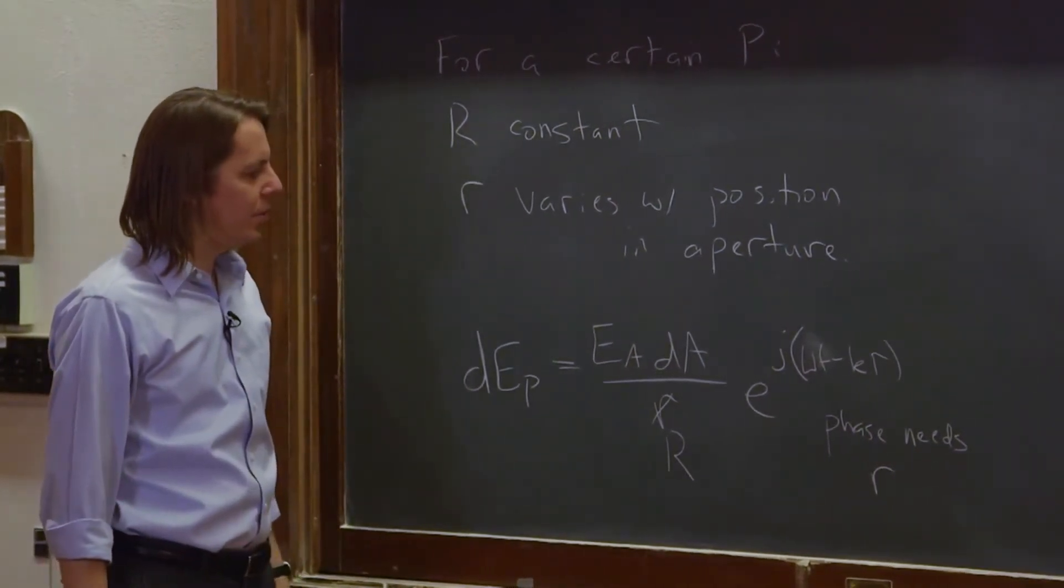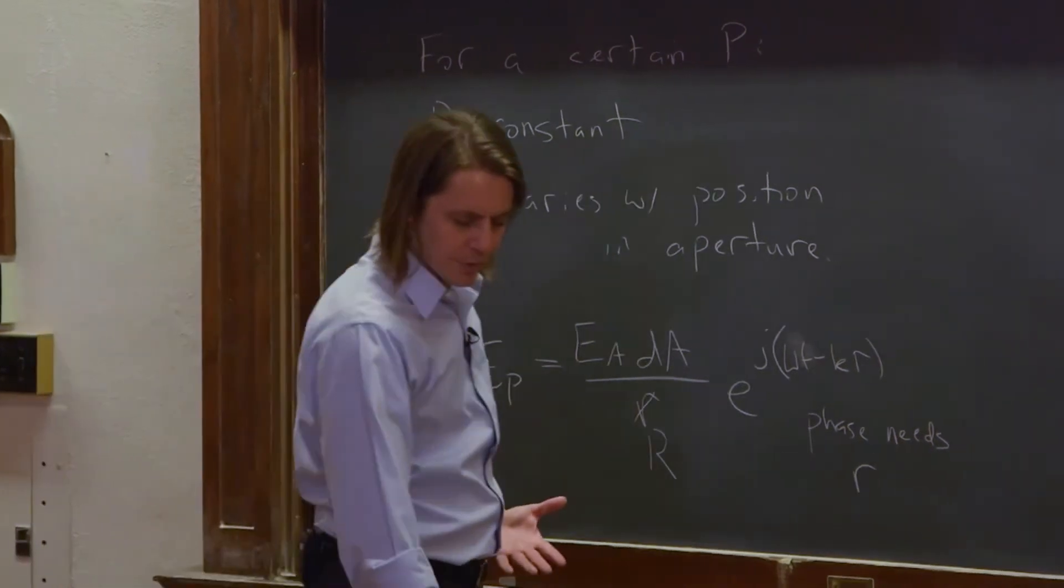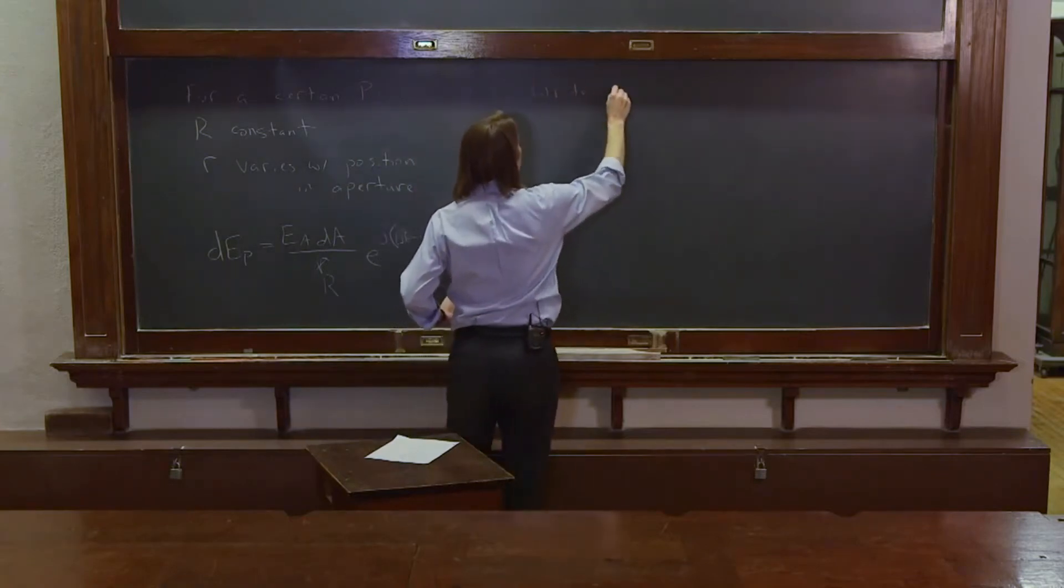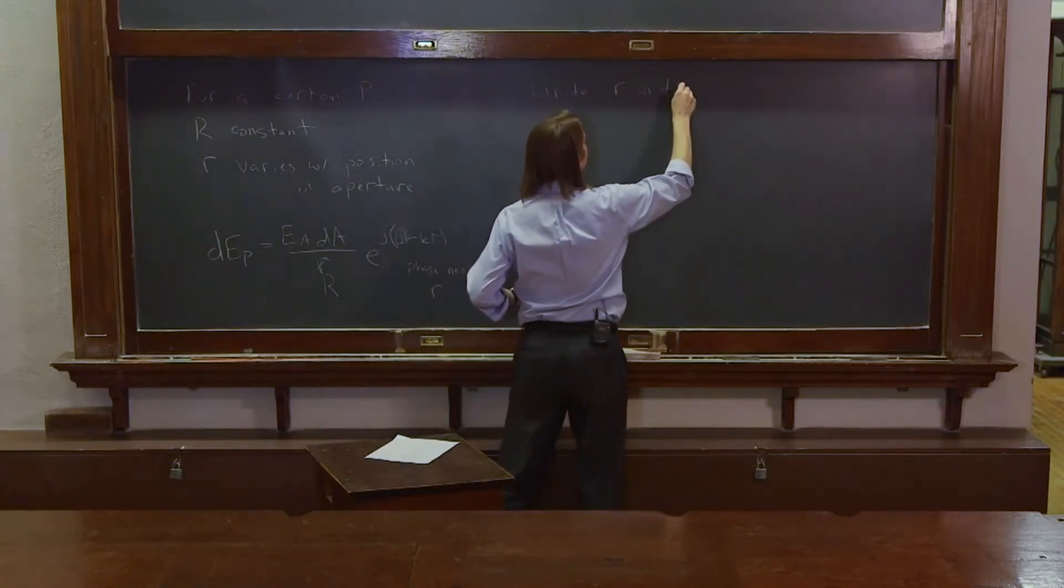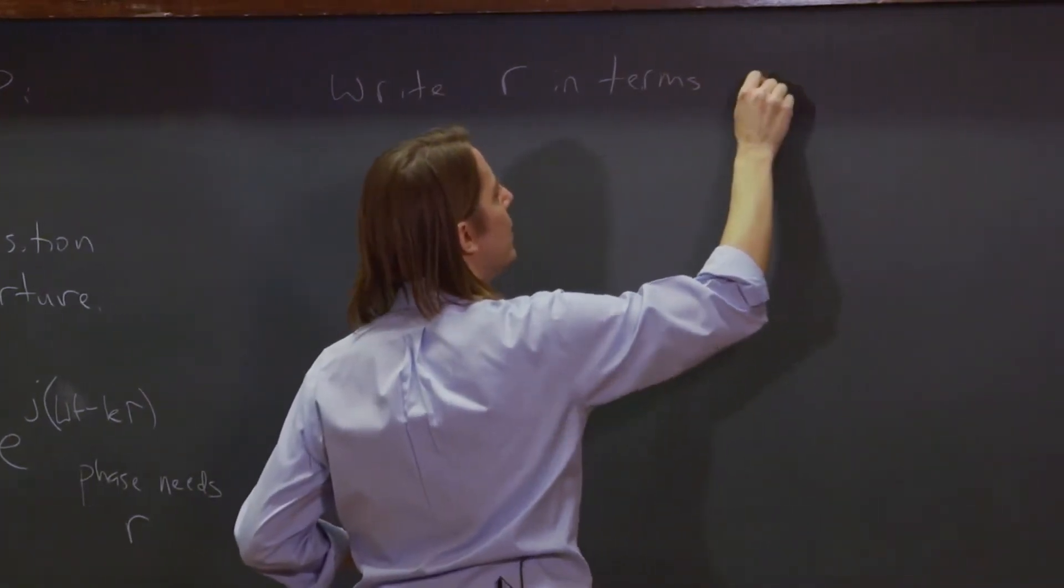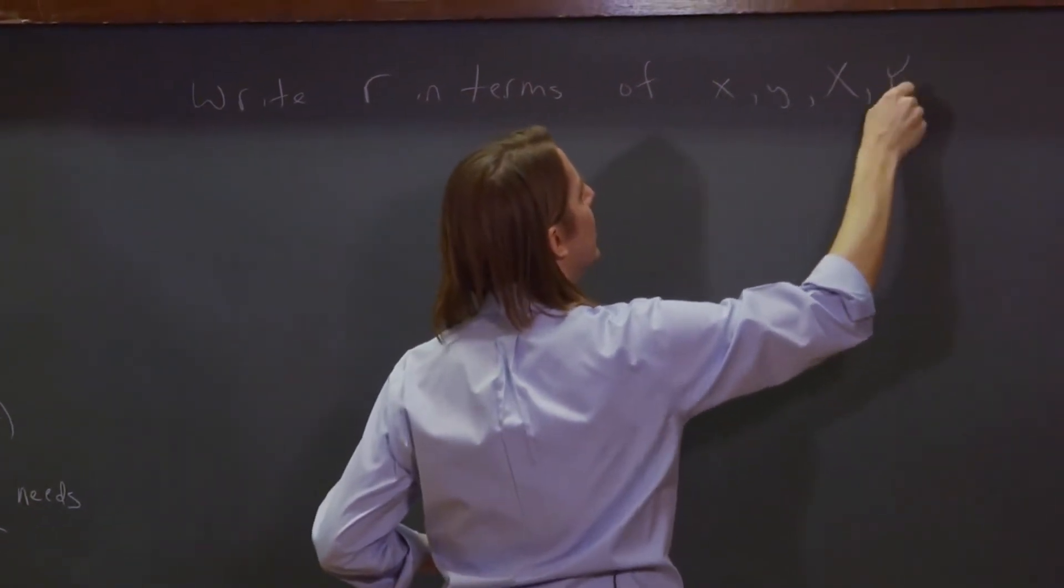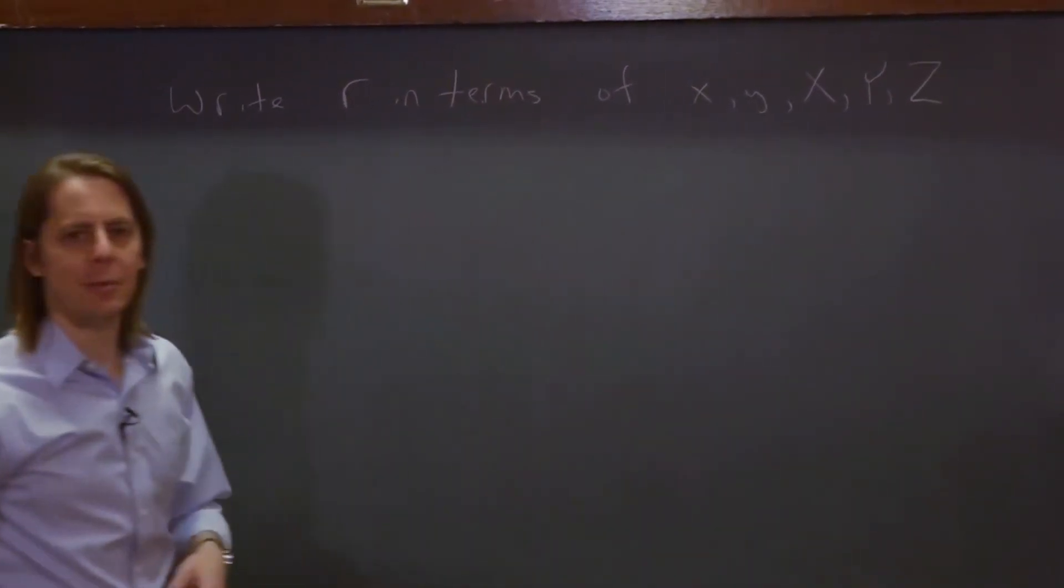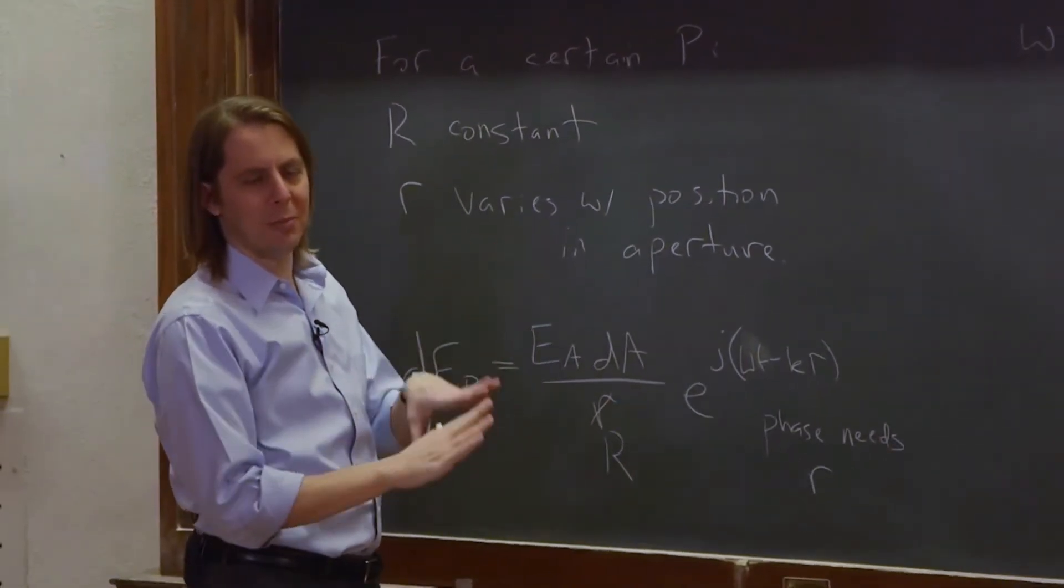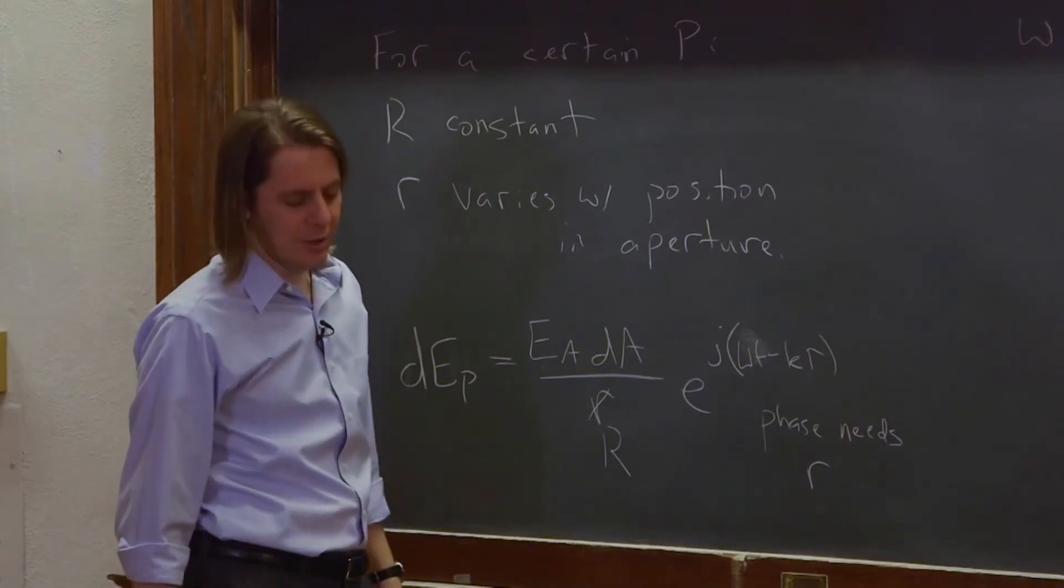So if the phase needs little r, we have to do this integral as little r changes. We want to write little r in terms of something we're going to integrate with respect to, which is little x and little y, and big x and big y and big z. When we do our integral, we're going to do it in that Cartesian coordinate system. We're going to integrate in the plane of the aperture in x and y, so clearly we need to write little r in terms of x and y.